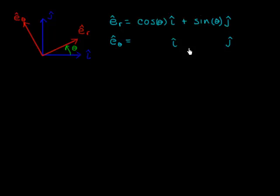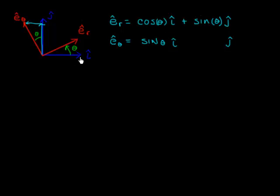Take a moment to figure out the two components of e-hat-theta. e-hat-theta has a component in the j-hat direction and in the i-hat direction, and this angle is theta. Its component in the i-hat direction is minus sine-theta — the horizontal piece goes to the left, whereas positive i is to the right. The vertical piece is cosine-theta, the adjacent side, and that gets a positive. So e-hat-theta equals minus sine-theta in i-hat plus cosine-theta in j-hat.